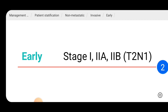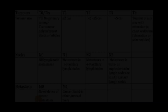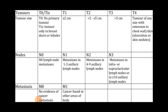Let's look at the staging before understanding early and locally advanced breast carcinoma. Before talking about stages one, two, three, or four, we need to have an idea about the TNM classification. TNM classification includes T for tumor size, N for nodal metastasis, and M for distant metastasis. The tumor size can be categorized as T0 to T4.